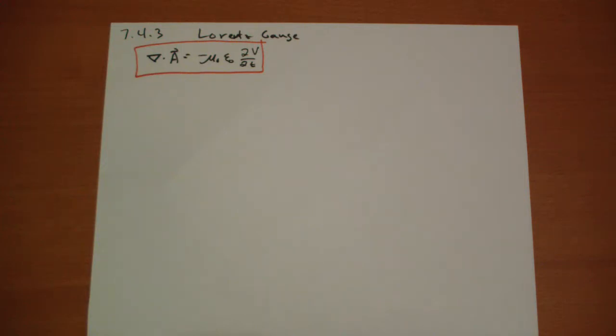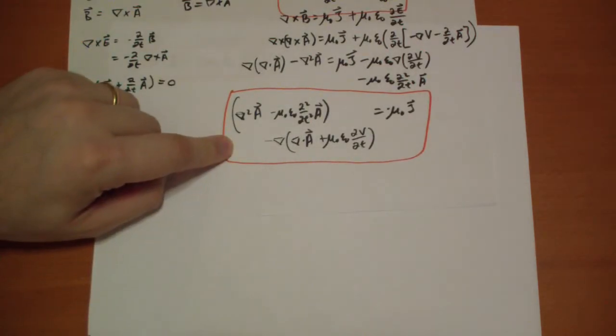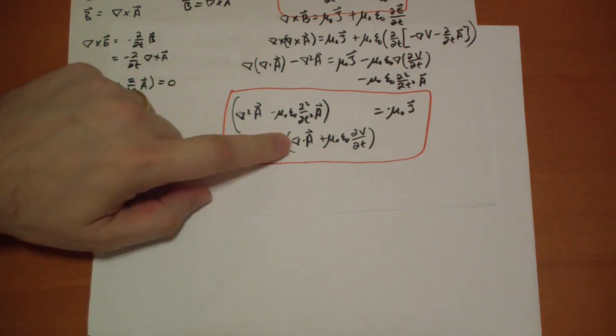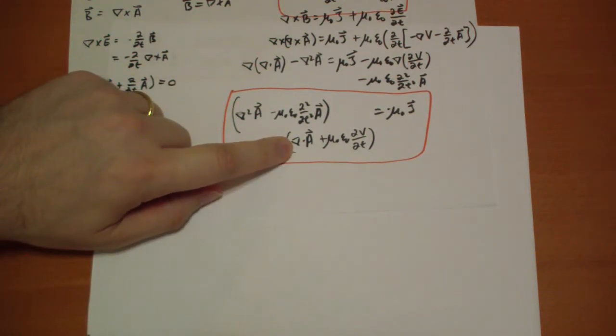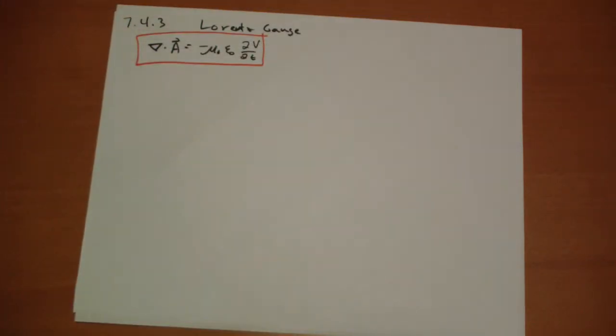So when we go here, and this complicated equation, and we plug in our A that has the divergence equal to that funky number we get, this is what we get for the current.